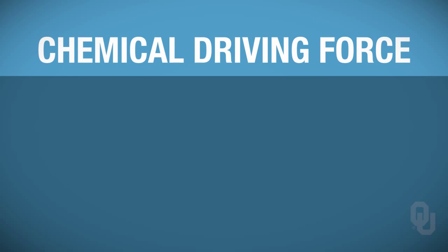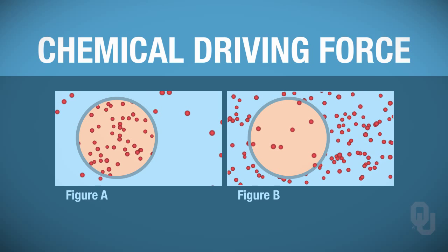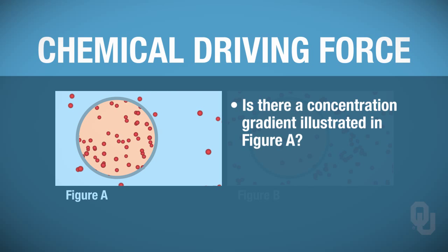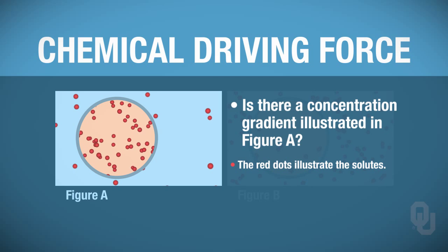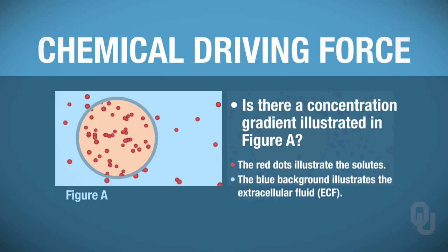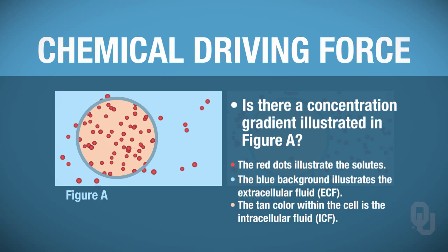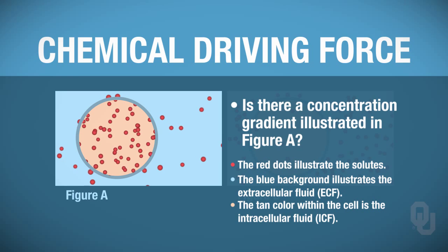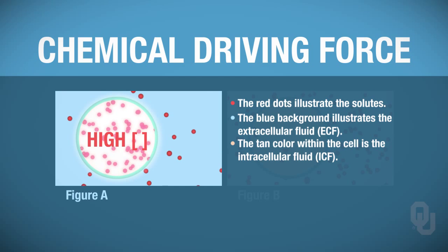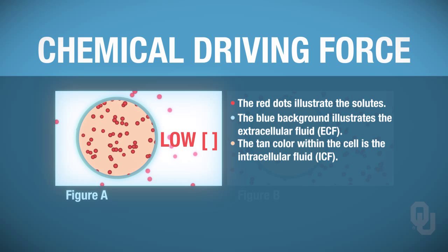First, let's focus on the chemical driving force. Remember, in a chemical driving force, you always have to think about a concentration gradient. When you look at Figure A, is there a concentration gradient? The red dots illustrate the solute; the blue background is your extracellular fluid, and the tan color within the cell represents solutes in the intracellular fluid. The answer is yes—there is a concentration gradient. There are far more solutes in the intracellular fluid, giving us a high concentration inside compared to a low concentration in the extracellular fluid.